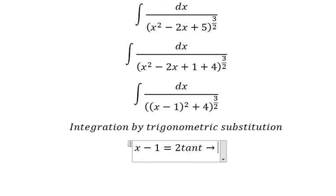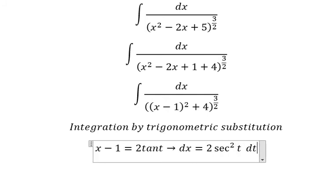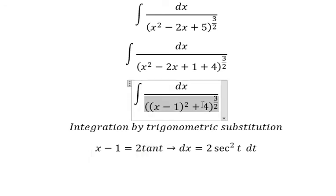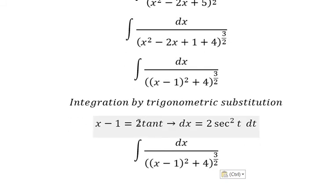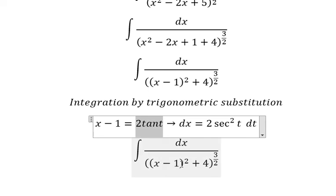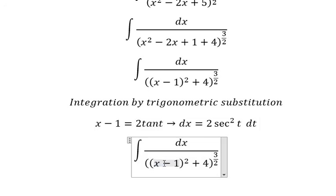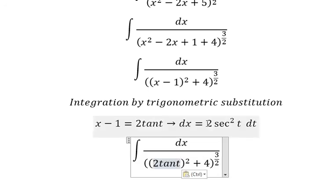Then dx equals 2 sec squared t dt. Why do we need to change this? Because we want to simplify the denominator. That's why we need to substitute 2 tan t so that we can simplify this power. So we put this substitution in here and change dx.